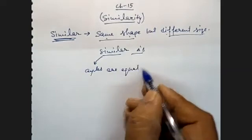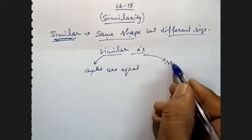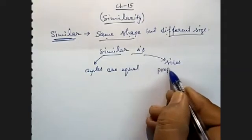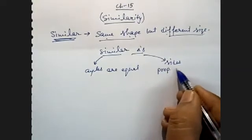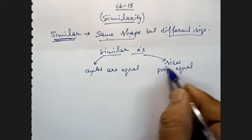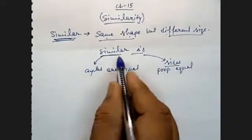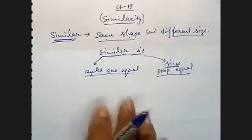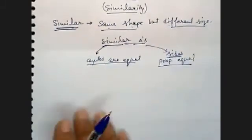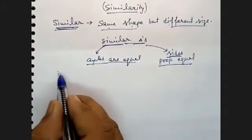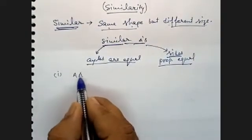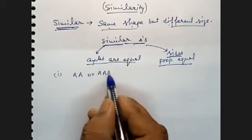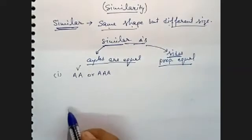For similar triangles, angles are equal but sides are proportionally equal. The rules for similarity are AA, and mostly the AA rule is used.